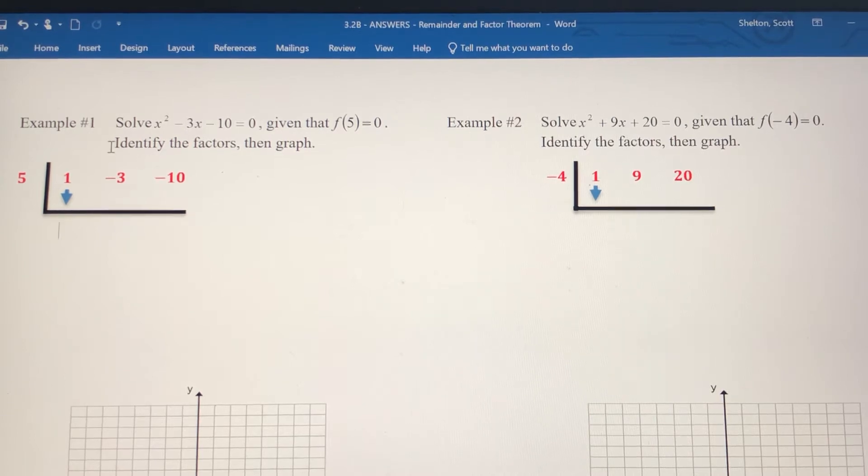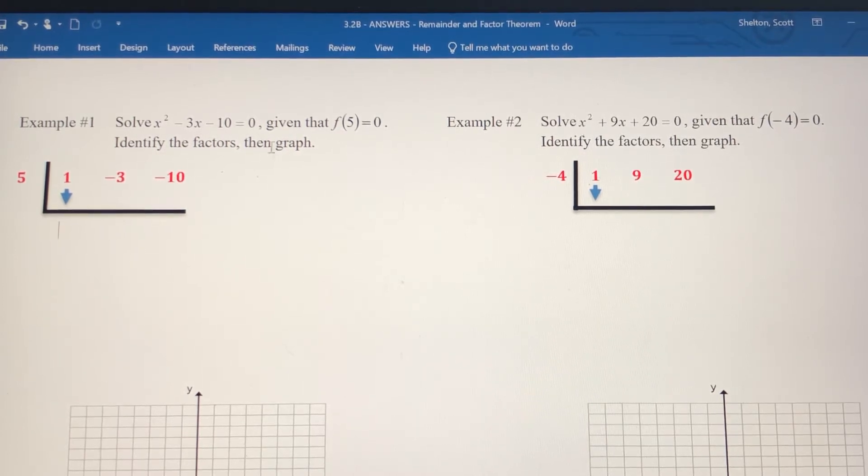Let's look at example number one. We've got a pretty simple quadratic here: x squared minus 3x minus 10, which could easily be factored. We're going to start with a couple examples that can easily be factored based on things you've learned previously, but we want to show you how to use the factor theorem to completely factor this quadratic and then solve it to find the two zeros.